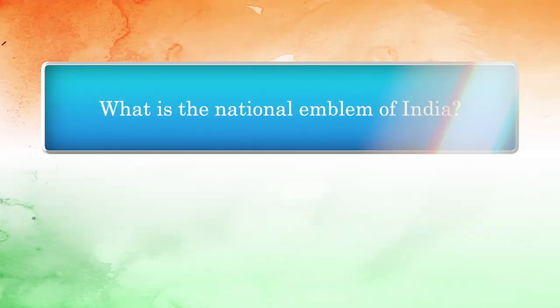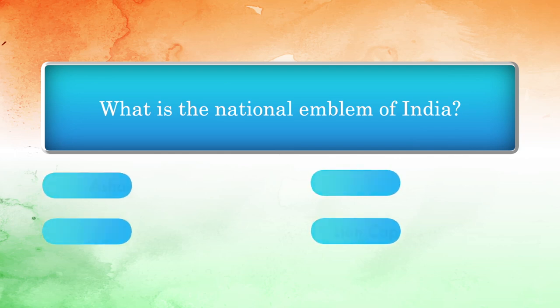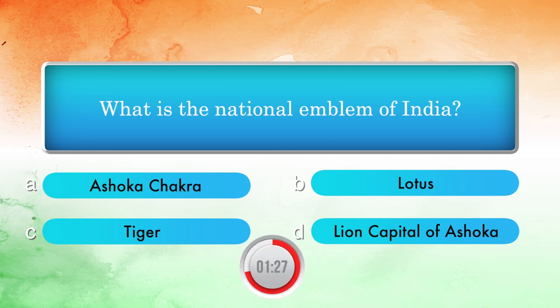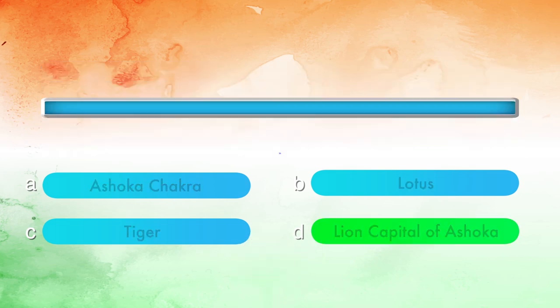What is the national emblem of India? Options: Ashoka Chakra, Lotus, Tiger, Lion Capital of Ashoka. Answer: Lion Capital of Ashoka.